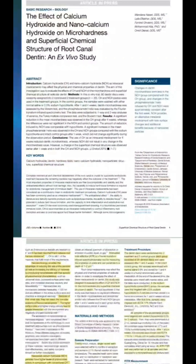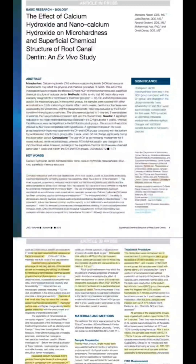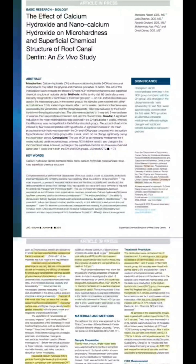As it has been reported before, especially from the Scandinavian groups, the long-term use of calcium hydroxide might negatively affect the fracture resistance of dentin. With the introduction of nanotechnology, which provides advantages in reducing particle size and material characteristics, using nano calcium hydroxide might have an effect on micro hardness and superficial chemical structure of dentin. Therefore, it was the aim of this study to evaluate the effect of calcium hydroxide and nano calcium hydroxide on micro hardness and chemical structure of dentin.